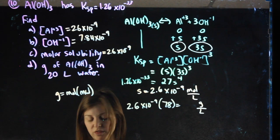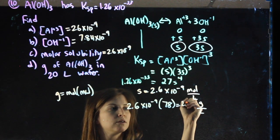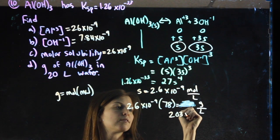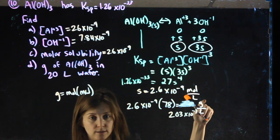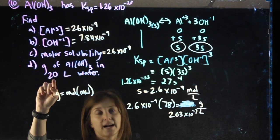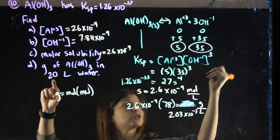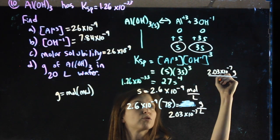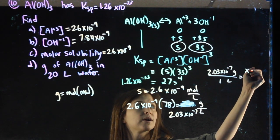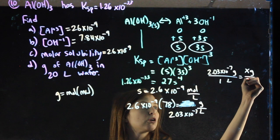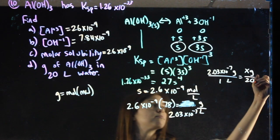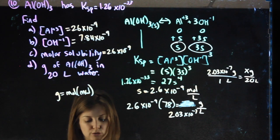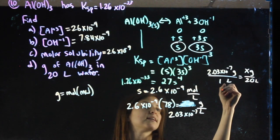And I get 2.03 times 10 to the negative 7th grams per 1 liter, but I haven't taken my 20 liters into account. So 2.03 times 10 to the negative 7th grams is for 1 liter. I want to find the grams for 20 liters. Multiply and I get 4.06 times 10 to the negative 6th grams.